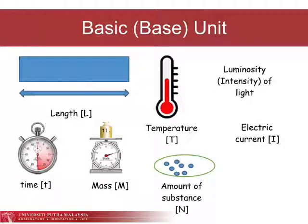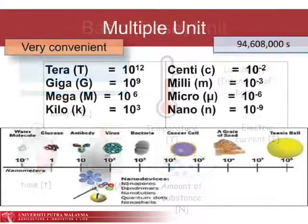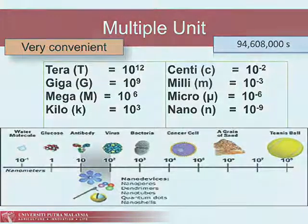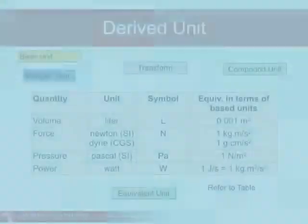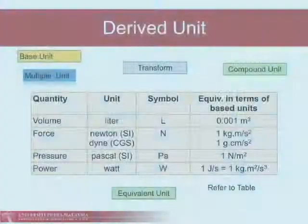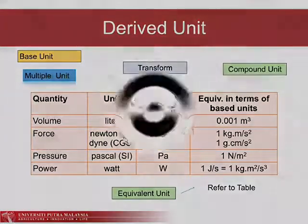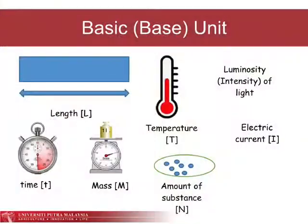A system of units has the following components: base units, multiple units, derived units, and compound units. In the base unit, there are seven basic dimensions used, which are length, temperature, luminosity, electric current, amount of substance, mass, and time.